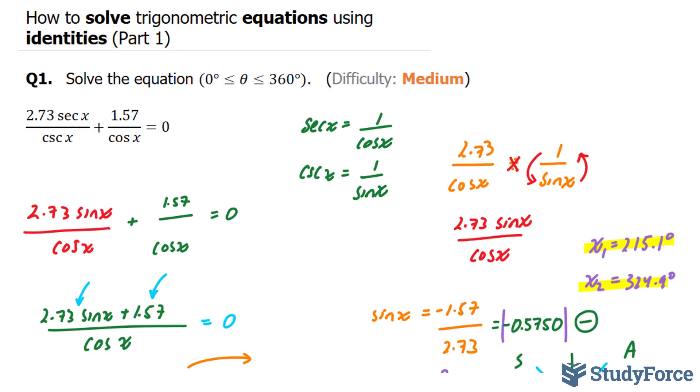So the two angles here that are correct are 135 and 315. Now you see why this one is marked easy. Not a lot of manipulation required. And so there you have it. Two examples on how to solve trigonometric equations using identities.